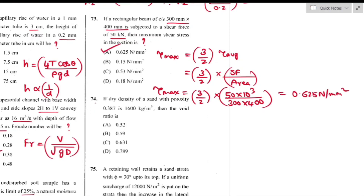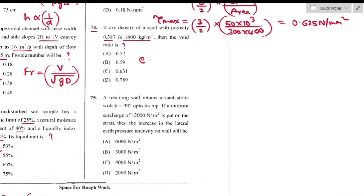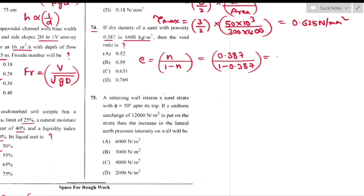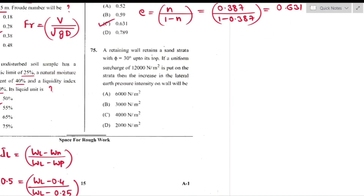Question number 74: Dry density of sand with porosity n = 0.387 is 1600 kg/m³. Void ratio e = n/(1−n) = 0.387/(1−0.387) = 0.387/0.613 = 0.631 — option C is the right answer.